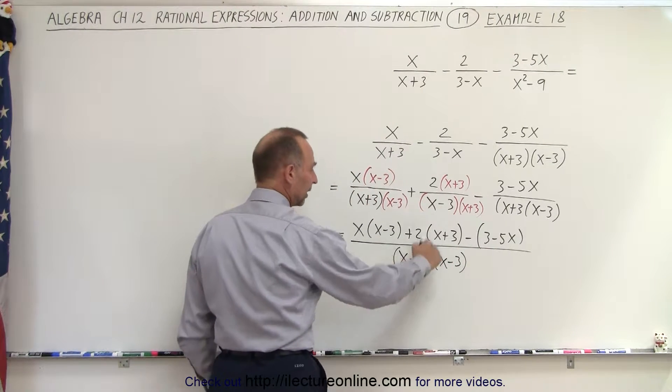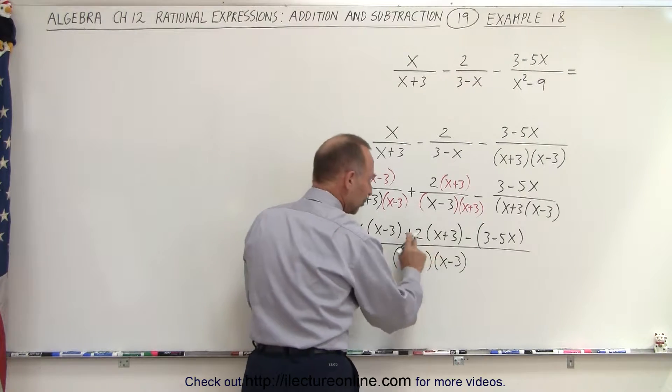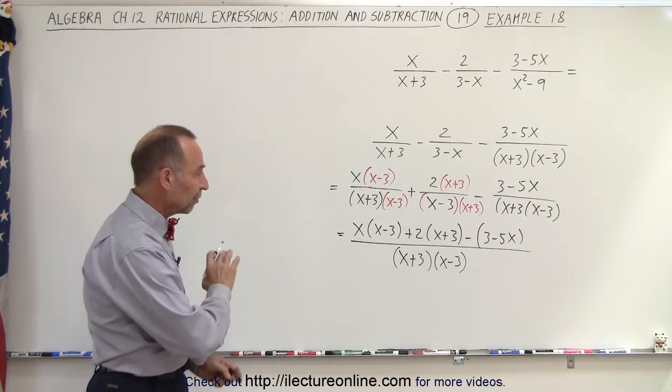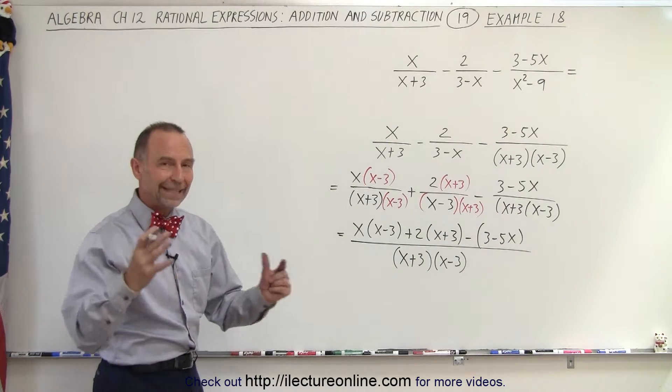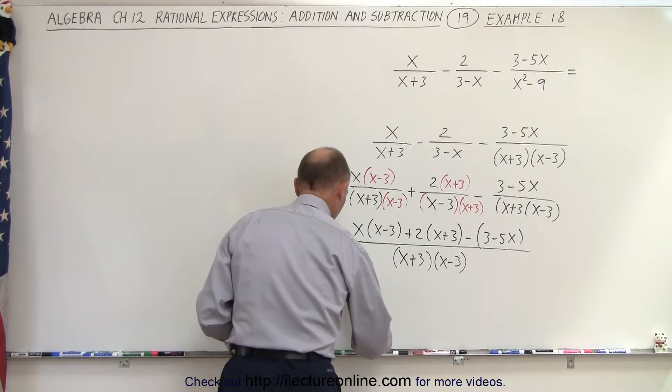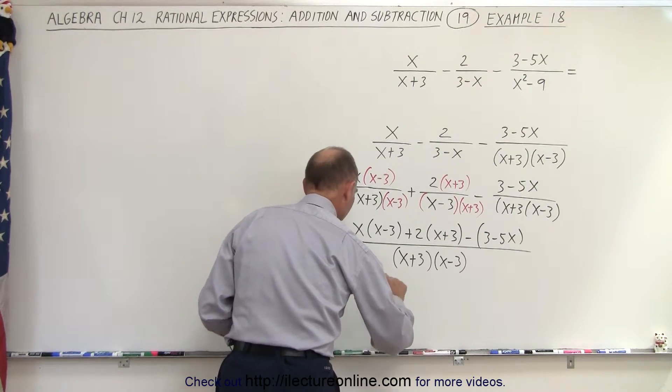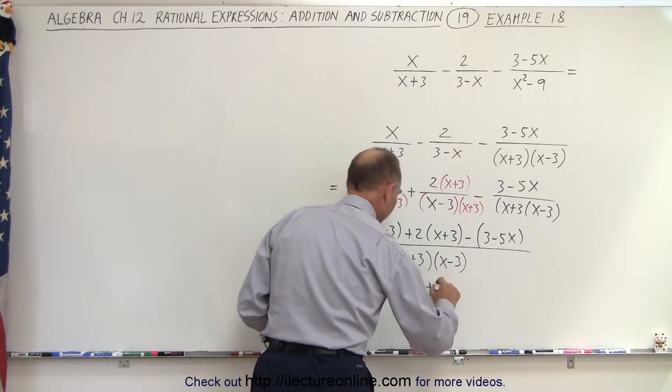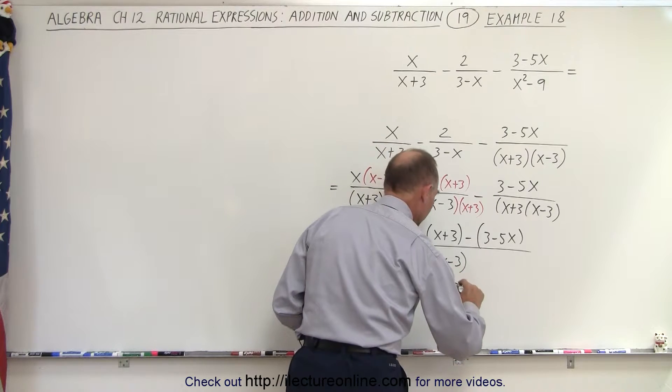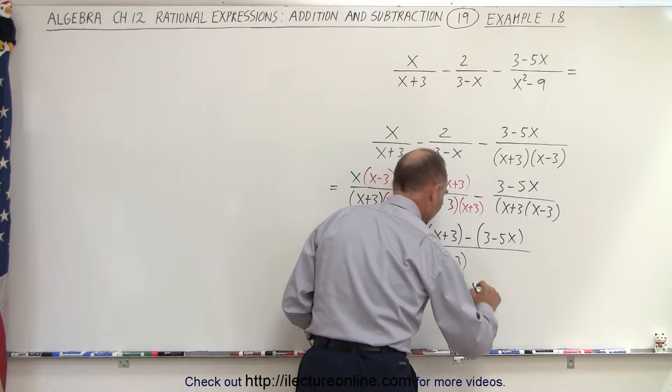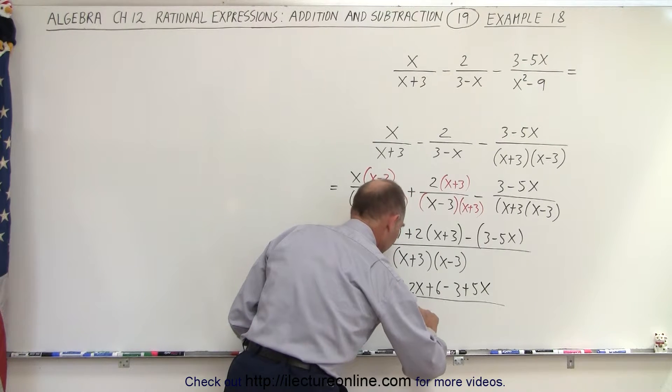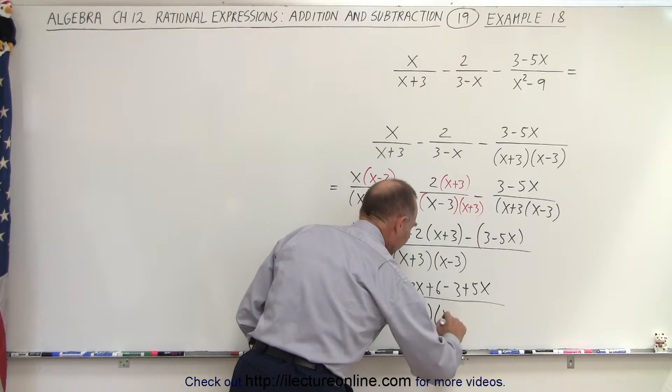And again, don't be tempted to cancel these things out, because you can't do that because of all the plus and minus signs. Let's multiply everything in the numerator and then collect common terms. So this is equal to x squared minus 3x plus 2x plus 6 minus 3 plus 5x, all divided by x plus 3 times x minus 3.